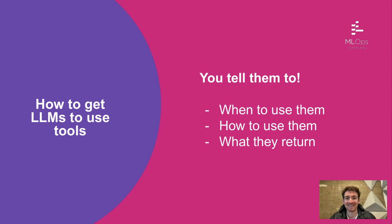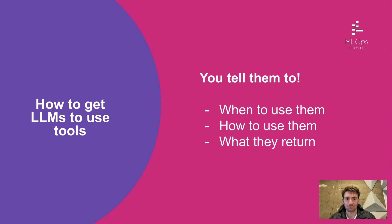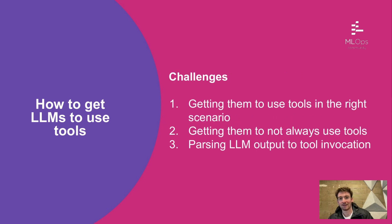So how do you get language models to use tools? Like everything with language models, you just kind of tell them to. You tell them when to use them, you tell them how to use them, and you tell them what they return. This is a bit oversimplistic obviously, but it does underscore a big part of the answer. It really is about what you put in the prompt, how you put it in the prompt, and then how you use the output as well.